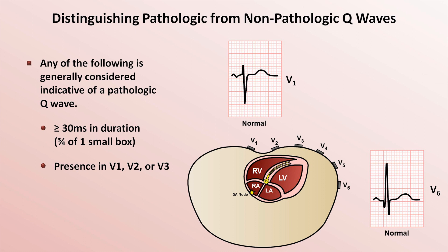Some resources state that a Q-wave in V1 can be normal, but the most authoritative sources state otherwise. The reason for the conflicting statements may be a conflation of the idea of a pathologic Q-wave and a Q-wave indicative of infarction. In other words, an isolated Q-wave in V1 does not necessarily suggest a prior infarct, but it nevertheless likely indicates some type of alternative pathology. A final possible indicator of a pathologic Q-wave is when the depth of the Q-wave equals or exceeds either one-third or one-fourth of the R-wave height — though this particular criterion is inconsistently defined and subsequently inconsistently applied.